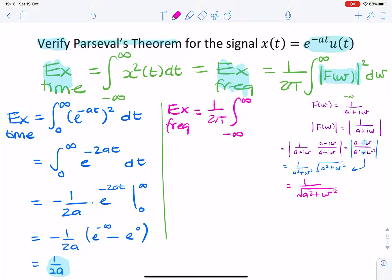Okay, so here, once I square it, see that there, that will give me 1 over a squared plus omega squared d omega.